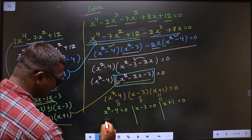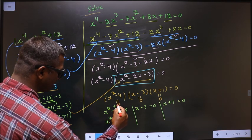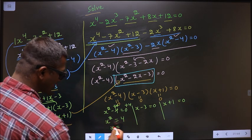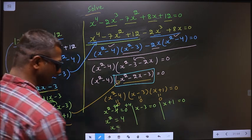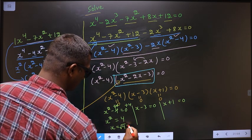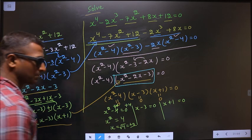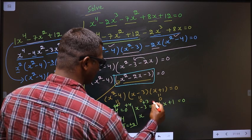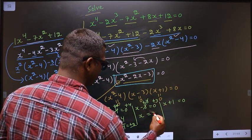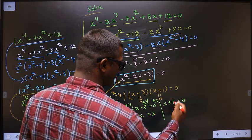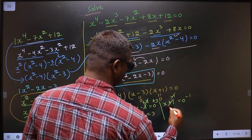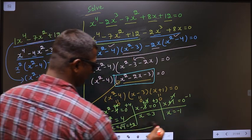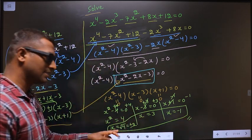From x² - 4 = 0, add 4 to both sides: x² = 4, so x = ±2. From x - 3 = 0, add 3 to both sides: x = 3. From x + 1 = 0, subtract 1 from both sides: x = -1. So the values of x are +2, -2, 3, and -1. These are our answers.